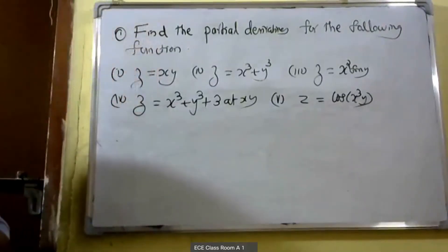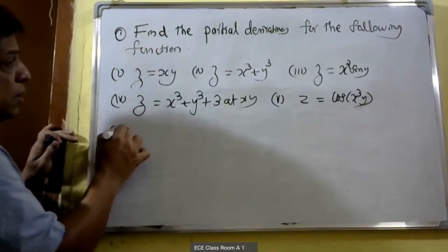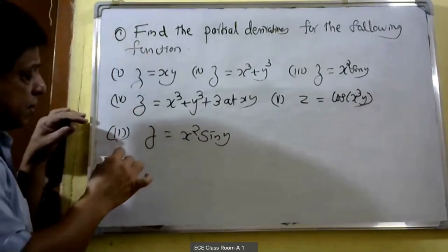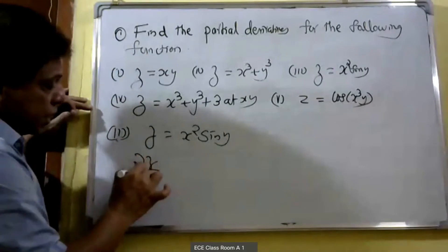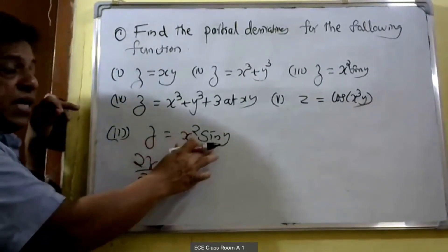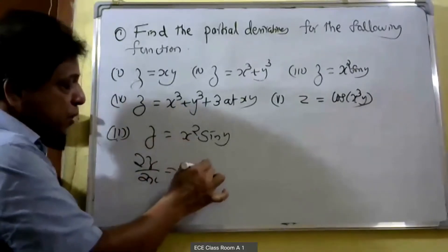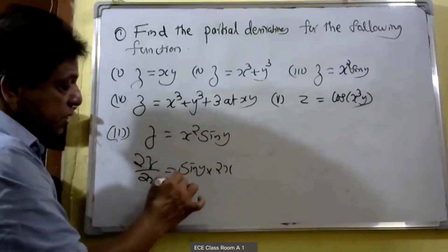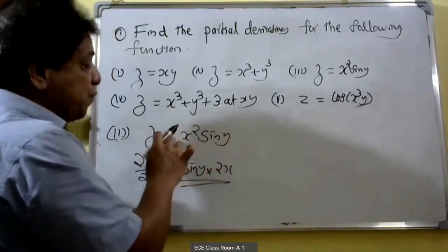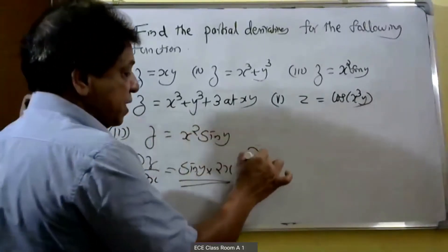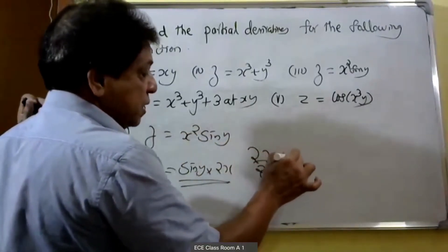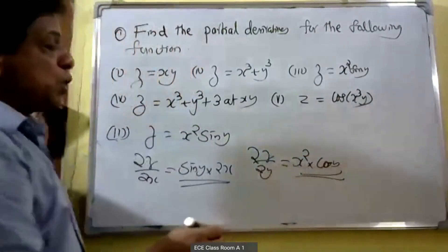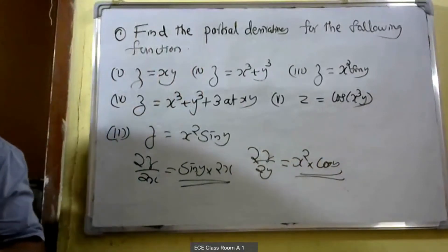Then we do the third problem. Partially differentiating with respect to x, ∂(x³)/∂x is 3x², and sin y is treated as constant. Partially differentiating with respect to y, x² is constant, so ∂z/∂y is equal to x² into cos y.